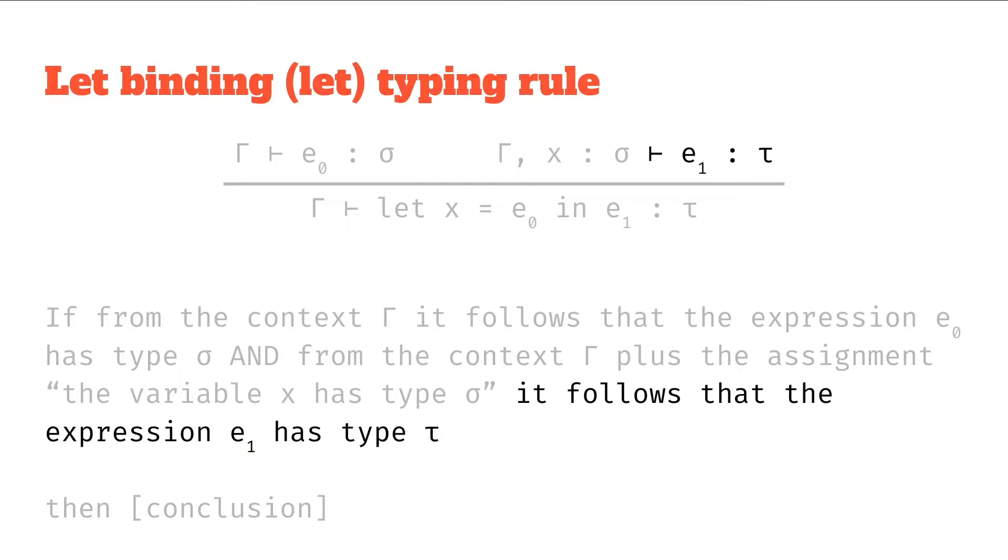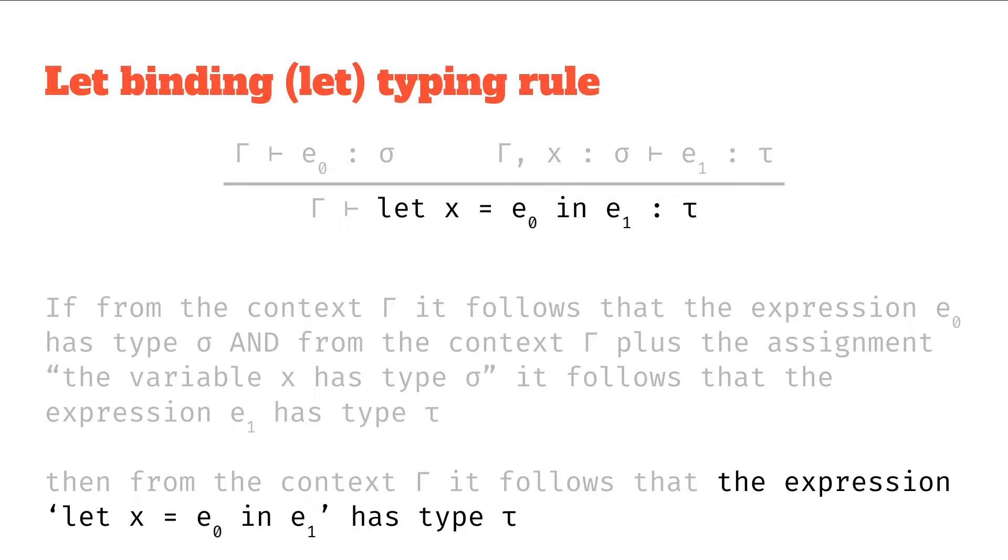Okay, let's continue with the bottom half. We've got: then from the context gamma it follows that the expression let x equals E0 in E1 has type tau. So it's just an assignment from the context.